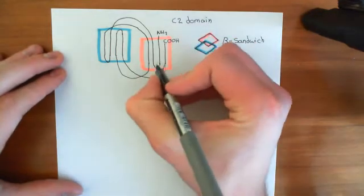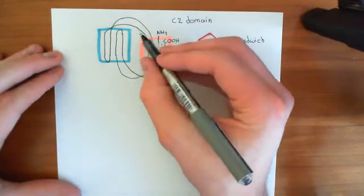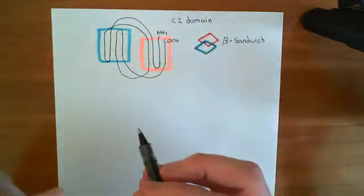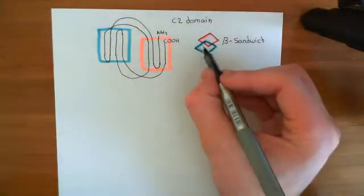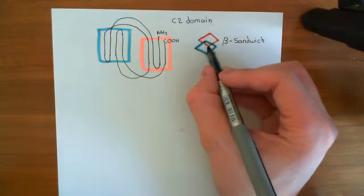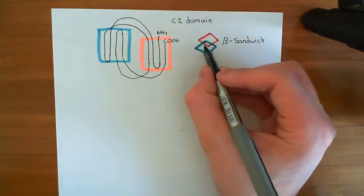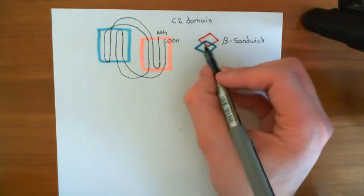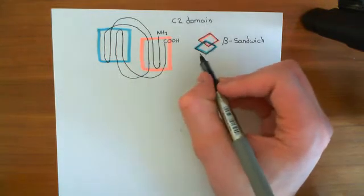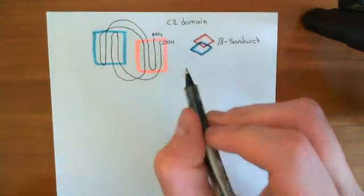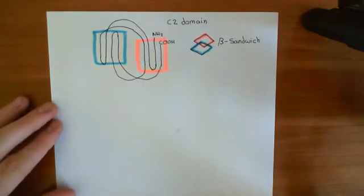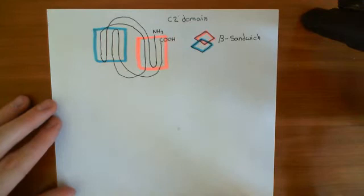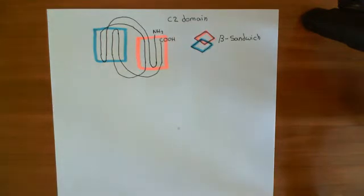This is the polypeptide folded into this structure. You can bind calcium ions in between these two beta-pleated sheets that are stacked on top of one another in this beta sandwich. And that's how these C2 domains can bind to calcium.